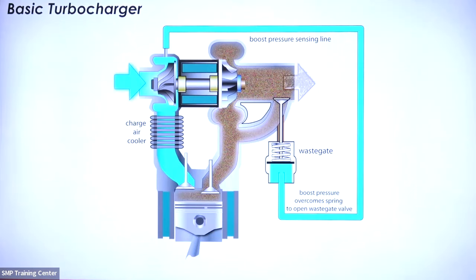To control the boost and engine power, turbocharger systems rely on wastegates, which are mounted before the turbine housing or inside of it, to regulate a percentage of exhaust gas and manage turbine speed and boost. Every wastegate features an inlet and outlet port through which exhaust gases may enter, a valve that regulates the flow of exhaust gas through the inlet port, and a spring diaphragm actuator which controls the valve opening and closing.